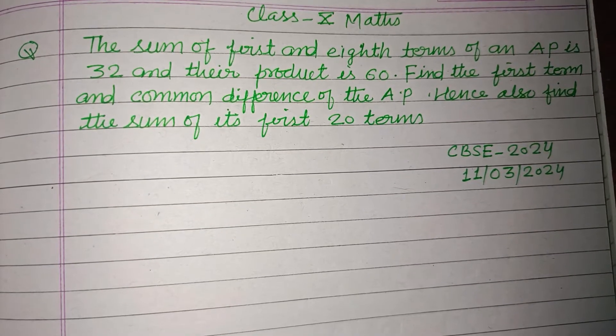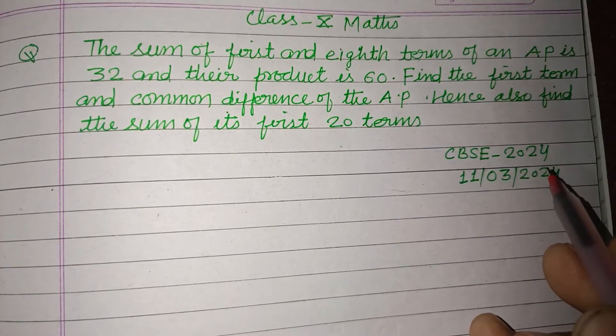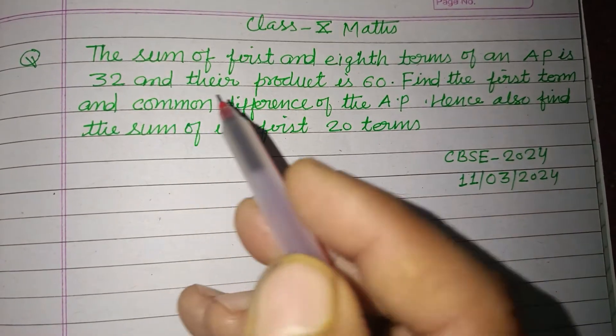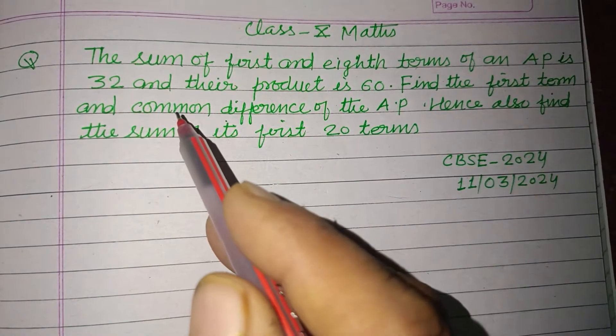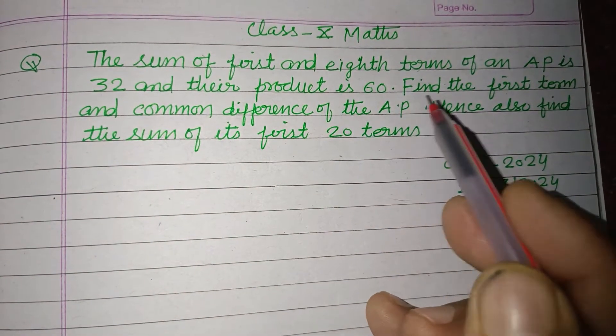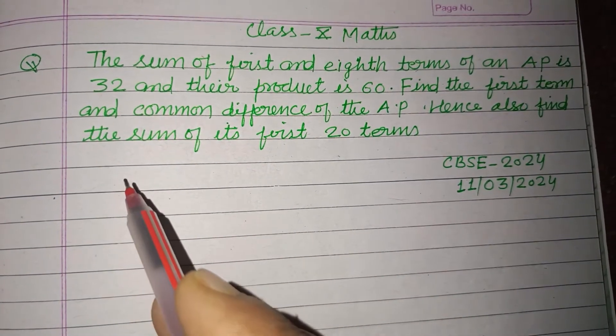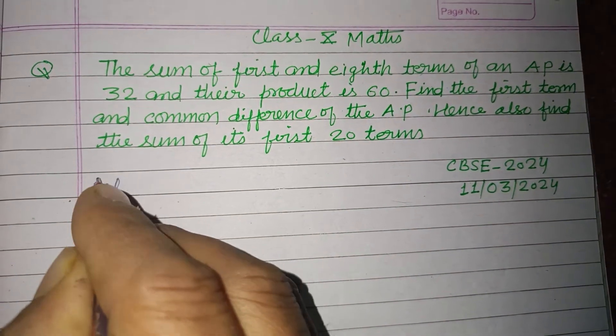Hello viewers, welcome to this YouTube channel. This is a question from CBSE board exam 2024 held on 11 March 2024. The sum of first and eighth term of an AP is 32 and their product is 60. Find the first term and common difference of the AP, hence also find the sum of its first 20 terms.